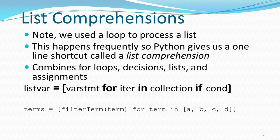Using a loop to process a list happens so frequently in Python that they developed a one-line shortcut called a list comprehension. While it looks a little strange, it is very useful — it combines loops, decisions, lists, and assignments. It looks like this: some_list = [variable_statement for iter in collection if optional_condition]. For our example, we replace our two lines of code with one: terms = [filterTerm(term) for term in [A, B, C, D]]. The first bracket closes the list; the second bracket closes the list comprehension.